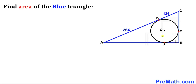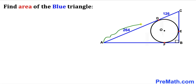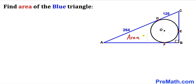Welcome to PreMath. In this video we have a circle with center O fully inscribed in a right triangle ABC, such that points D, E, and F are points of tangency. Segment AD is 264 units and segment CD is 126 units. Our task is to calculate the area of the blue triangle ABC.